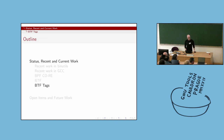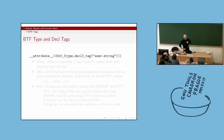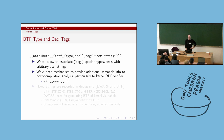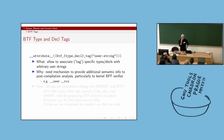Another thing missing in BTF is type tags and declaration tags, which are fairly kernel-specific. There's semantic information associated with types that isn't encoded in the type system. You want to pass that information to the verifier — for example, if a pointer comes from user space and a BPF program interacts with a data structure containing such a pointer, the verifier needs to check that the BPF program isn't doing inappropriate things with it.